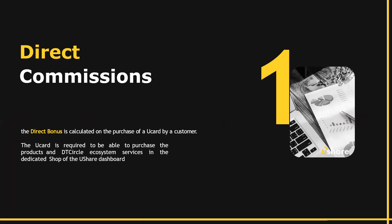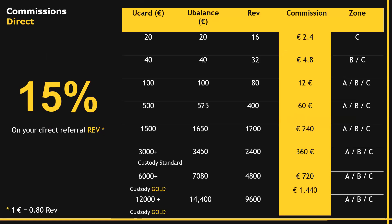Let's talk about the direct commissions or direct bonus. This is the bonus calculated on the U-Card purchased when you sponsor somebody. One U-Card generates 80% of the value of the U-Card in REV or point volume. Your 15% direct bonus is calculated based on that point volume. For example, a 100 euro U-Card will generate 80 REV, which is 80 point volume because 80 represents 80% of 100. If you sponsor the person who purchased the 100 euro U-Card, you will get 15% of the 80 point volume, which is 12.